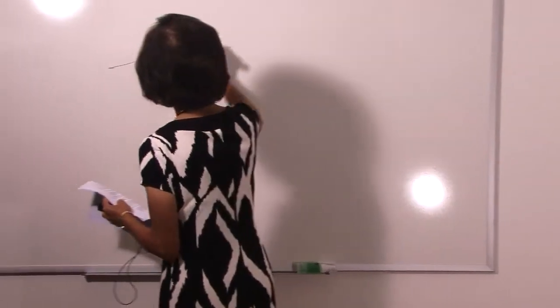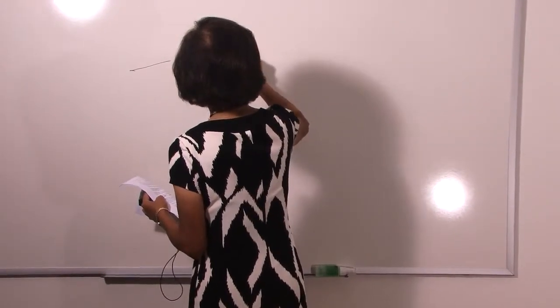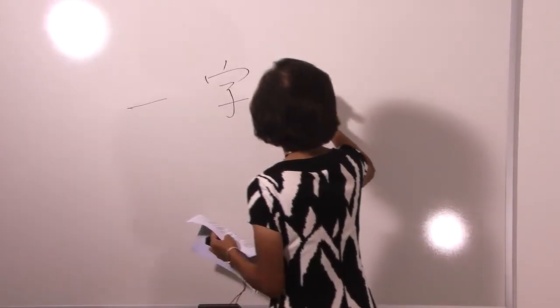My Aunt Baba, and for those of you who've read Chinese Cinderella, you might remember her, my Aunt Baba used to sit beside me and teach me one Chinese word a day, yi zi, yi ri. This is how it's written, yi zi, yi ri.